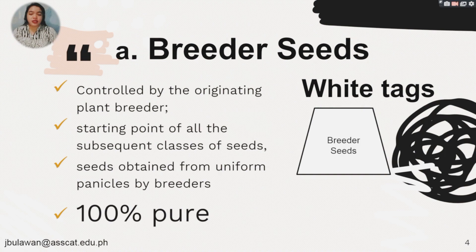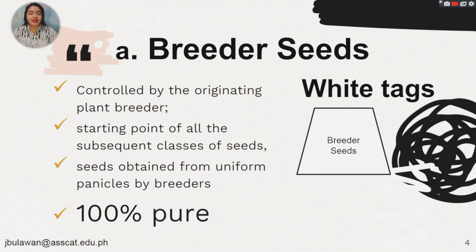First, we have breeder seeds. It is controlled by the originating plant breeder, a starting point of all the subsequent classes of seeds, and seeds obtained from the uniform panicles by the breeders. So it is 100% pure seeds. The tag for these breeder seeds is white.